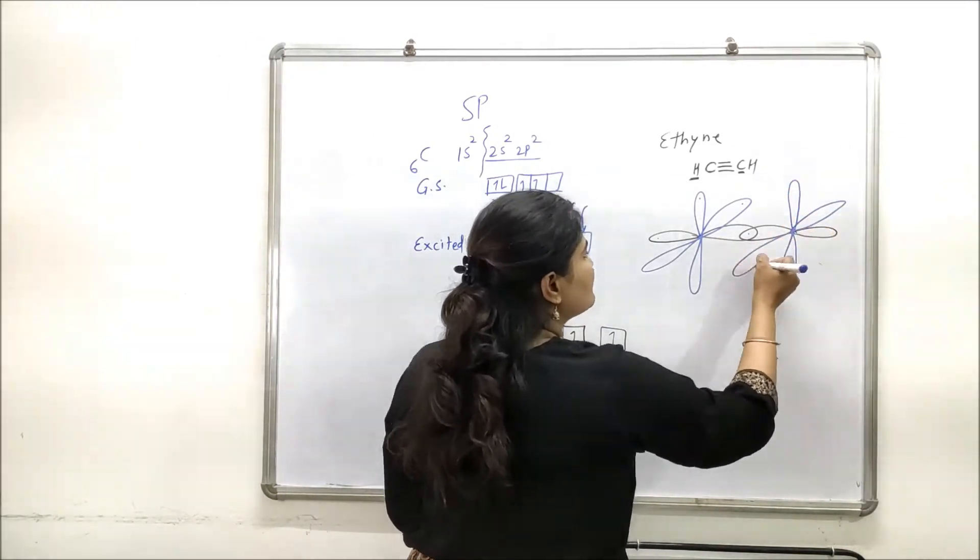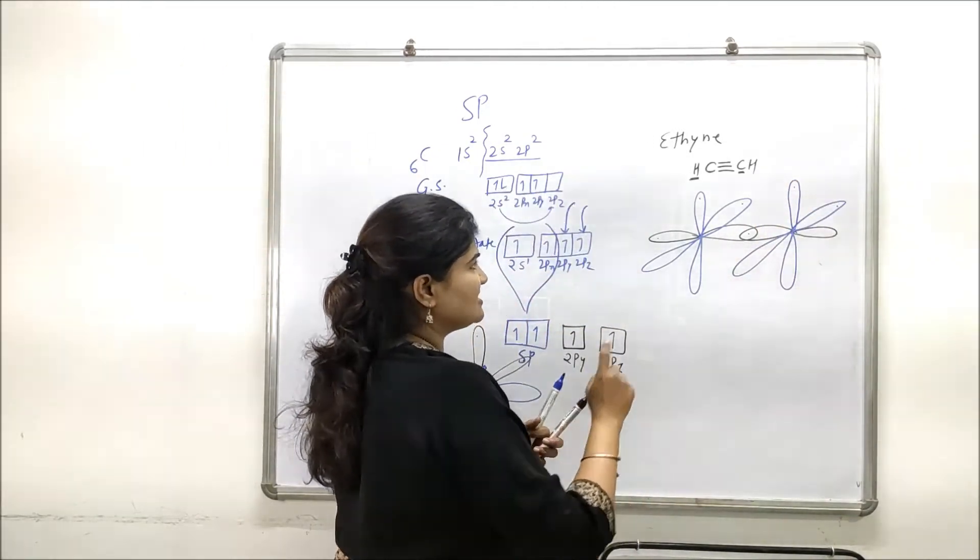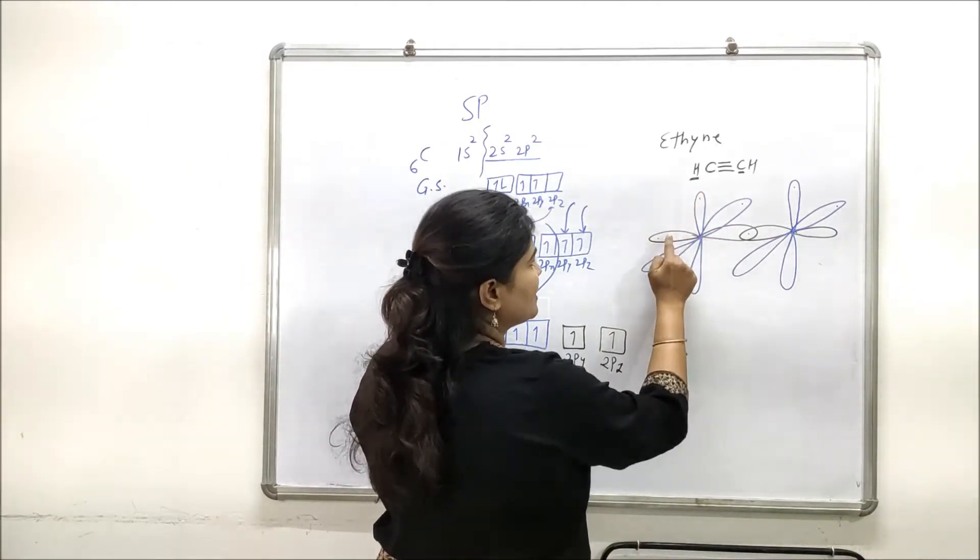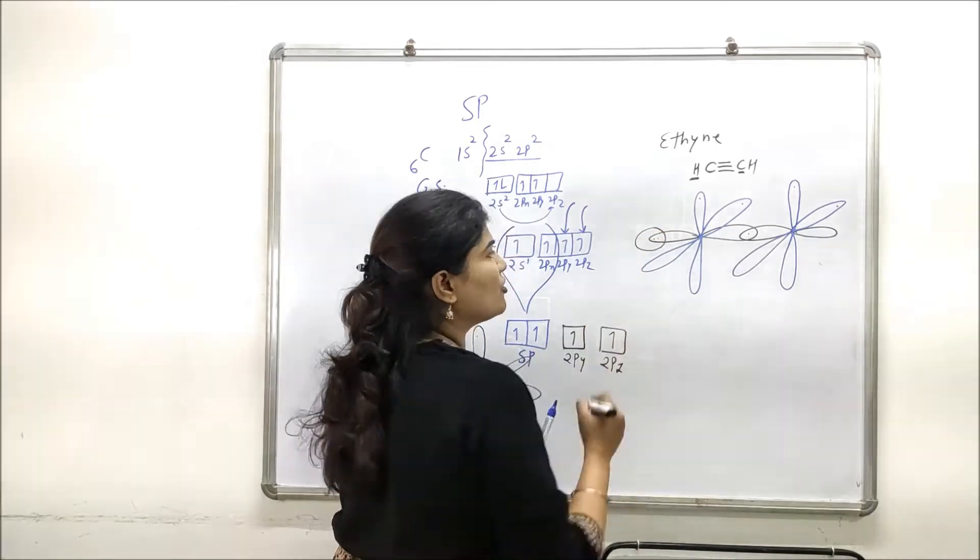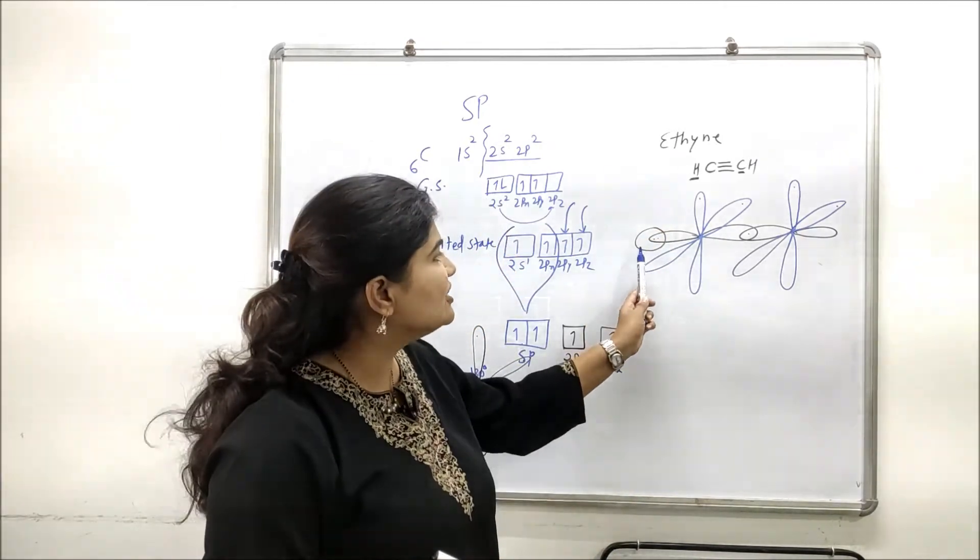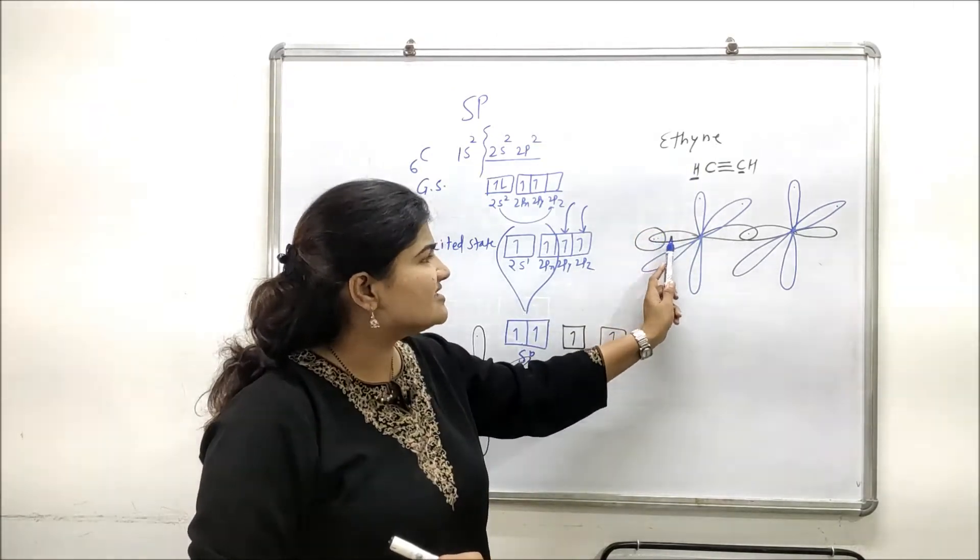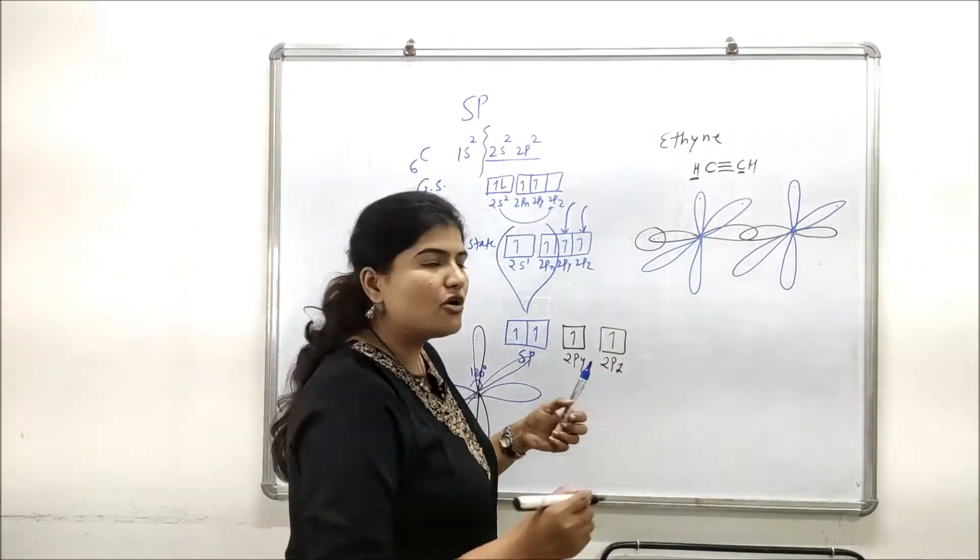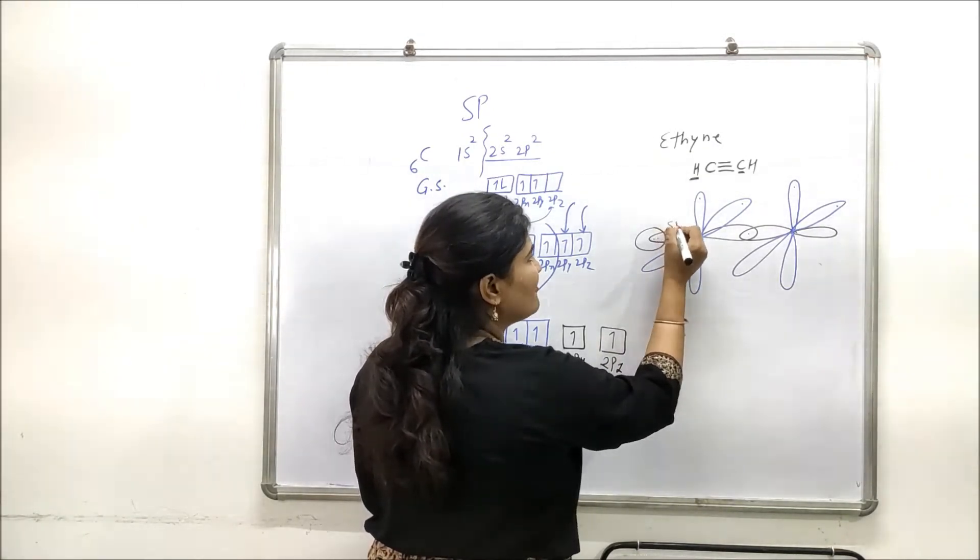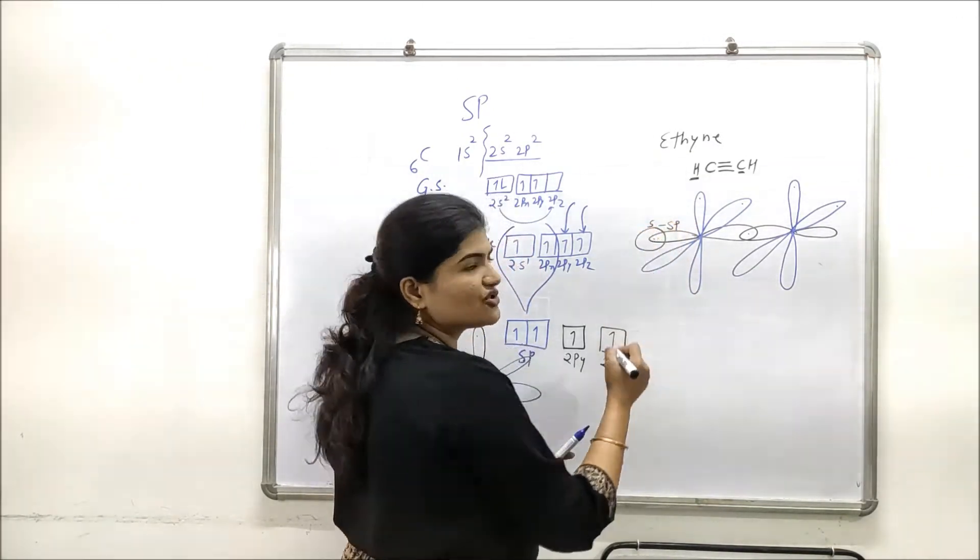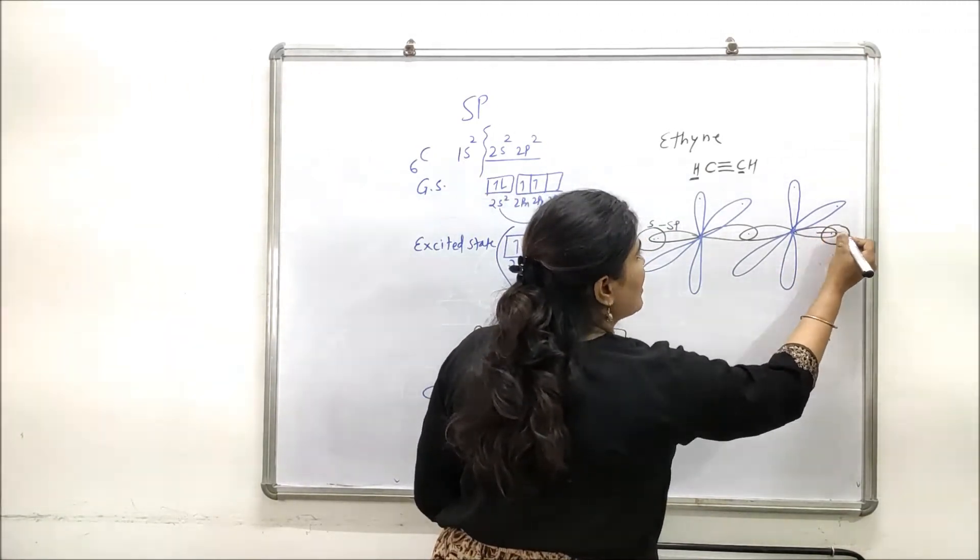As we can see, this unpaired electron of sp hybrid orbital will be used to form a sigma bond with hydrogen's 1s orbital. So this carbon-hydrogen bond will look like this: it is a sigma bond formed by axial overlap of sp of carbon and s of hydrogen. Similarly here, 1s of hydrogen will form a sigma bond.